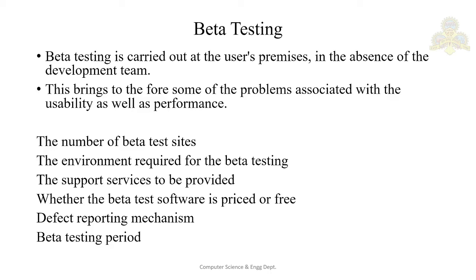The second aspect is the environment required for beta testing — the exact hardware and software configuration must be specified, matching the actual environment where the software runs. The third aspect is support services to be provided: if users encounter problems during beta testing, they need a helpline and the support mechanism must be worked out and specified.